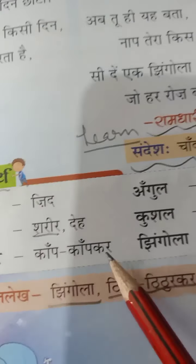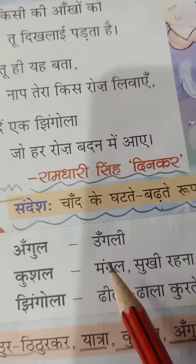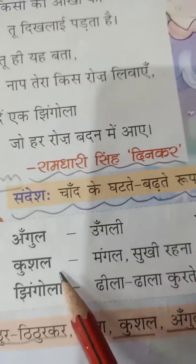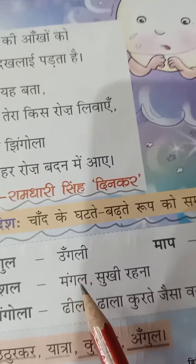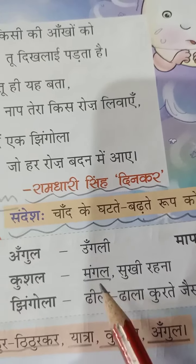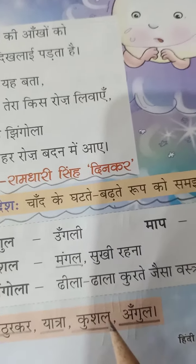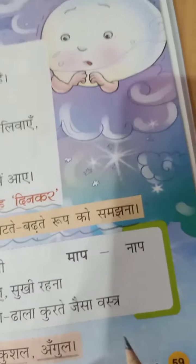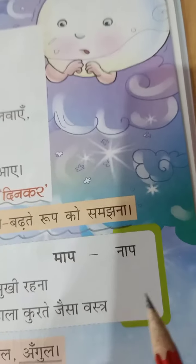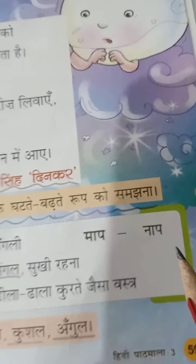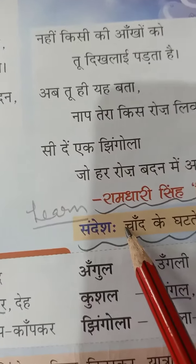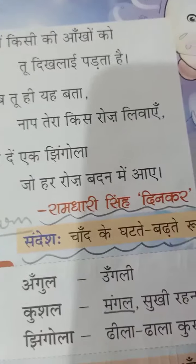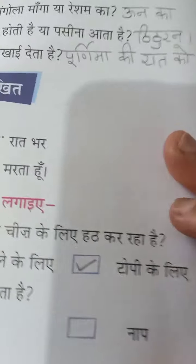Kushal, mangal, ya sukhi - any one of these you should memorize. Jingola, dhila, dhala, kurte jaisa - these are vastr (clothing). Maap, naap - these are the word meanings. You should also remember the poet's name. Learn these words well.